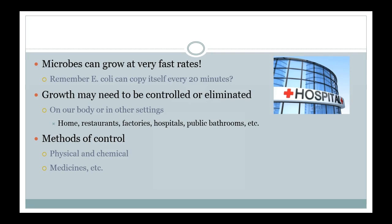This is especially important in public settings like public bathrooms, hospitals, restaurants, and factories where food is being processed — and also our homes. Do we need to kill off absolutely everything? No, but in a hospital setting, especially if somebody has surgery, it's more crucial. We're going to talk about physical methods of control and chemical methods of control, and also medicines that are able to treat infections once they are causing disease.